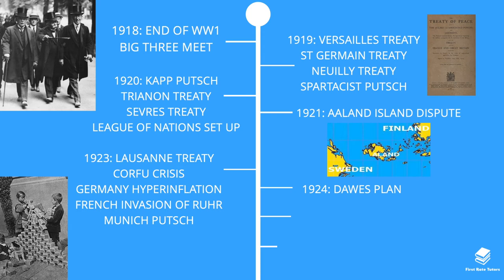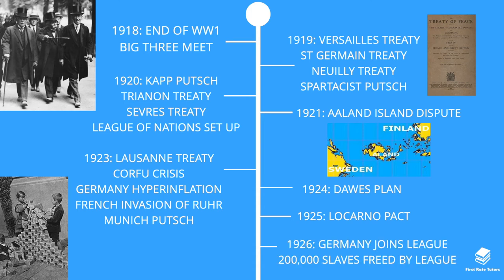In 1924, Gustav Stresemann was able to rescue Germany economically. He negotiated the Dawes Plan with the USA, securing five billion US dollars to help with reparation payments. In 1925 there was the Locarno Pact, and in 1926 Germany was invited to join the League of Nations. Another win for the League that year was that 200,000 slaves were freed.